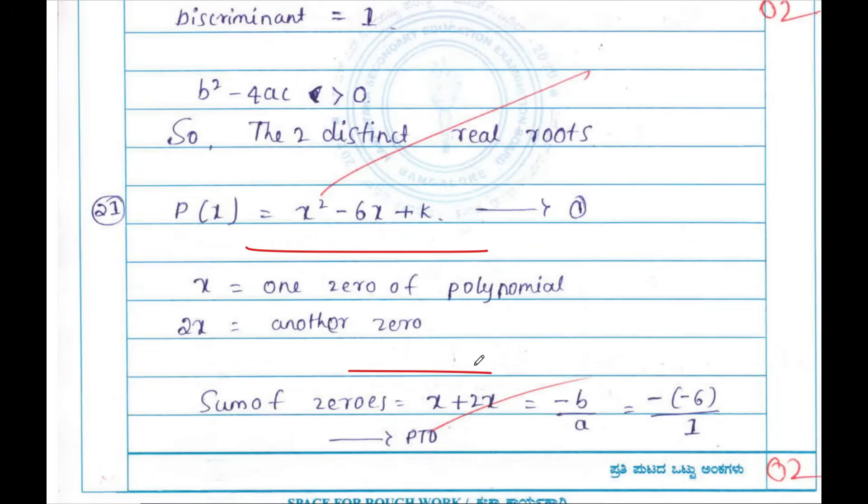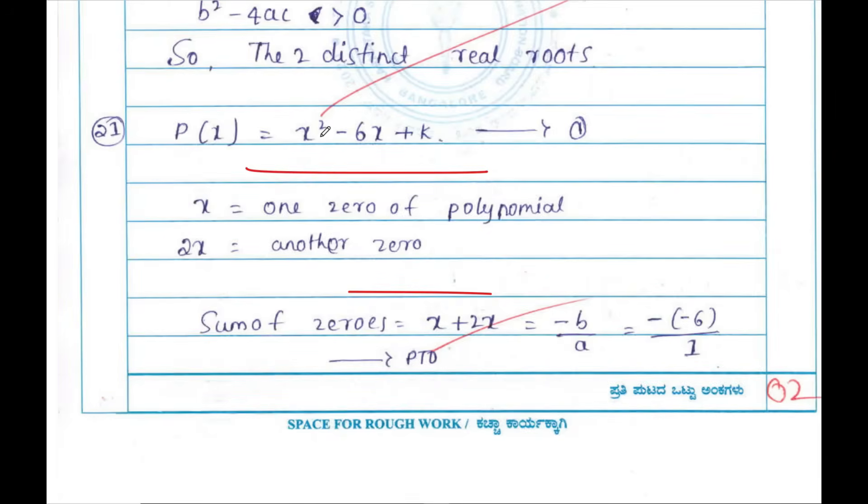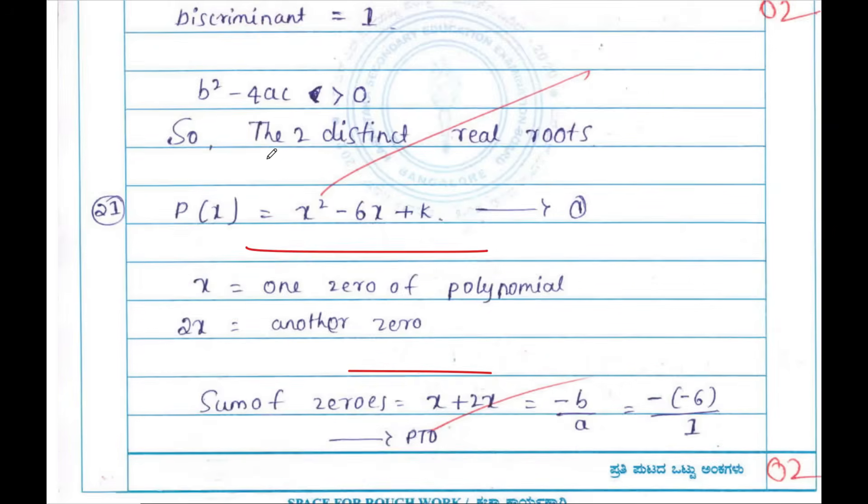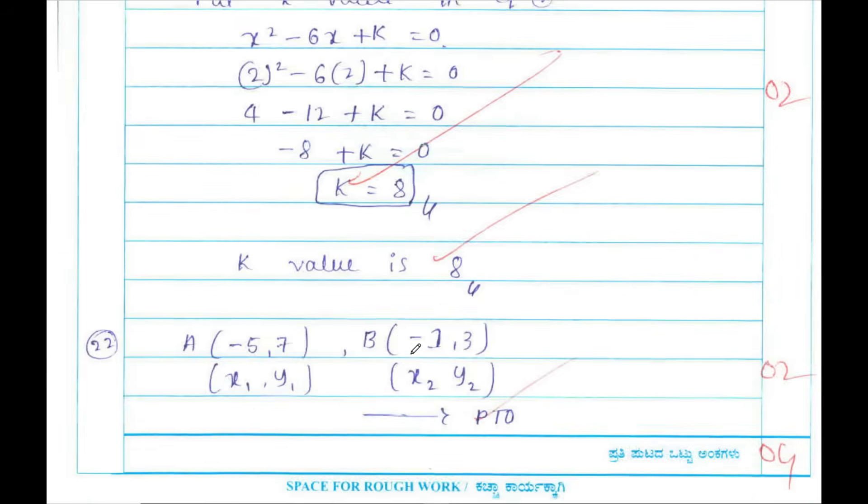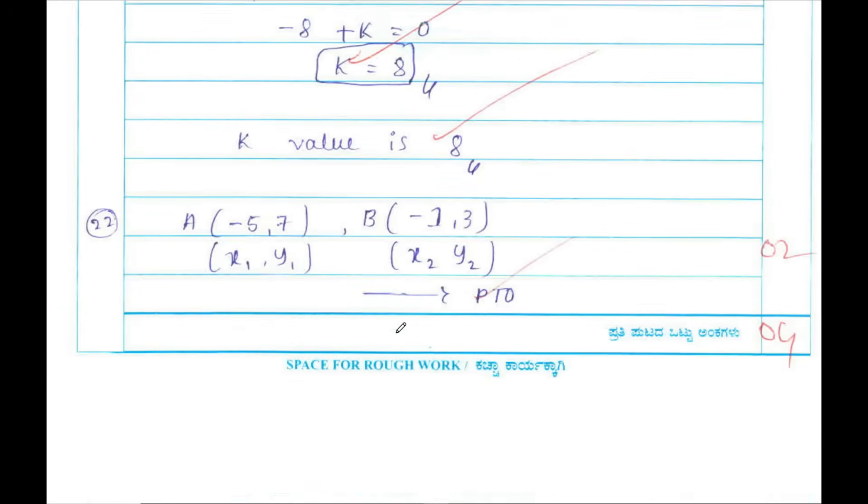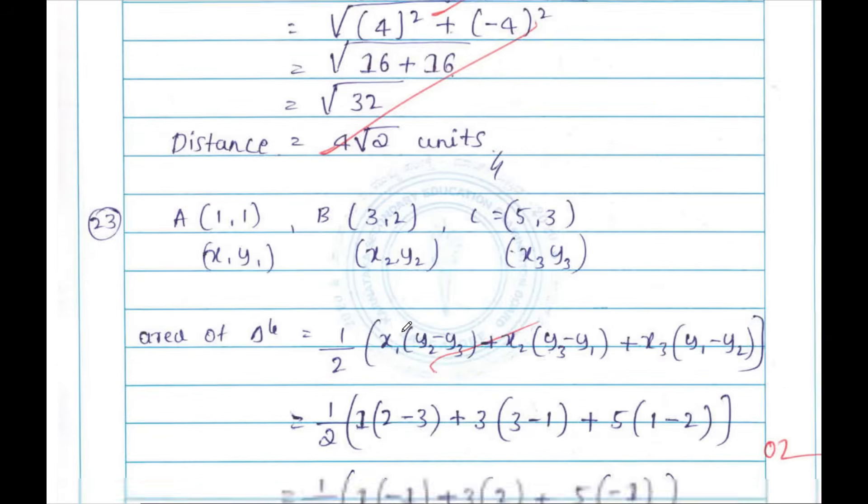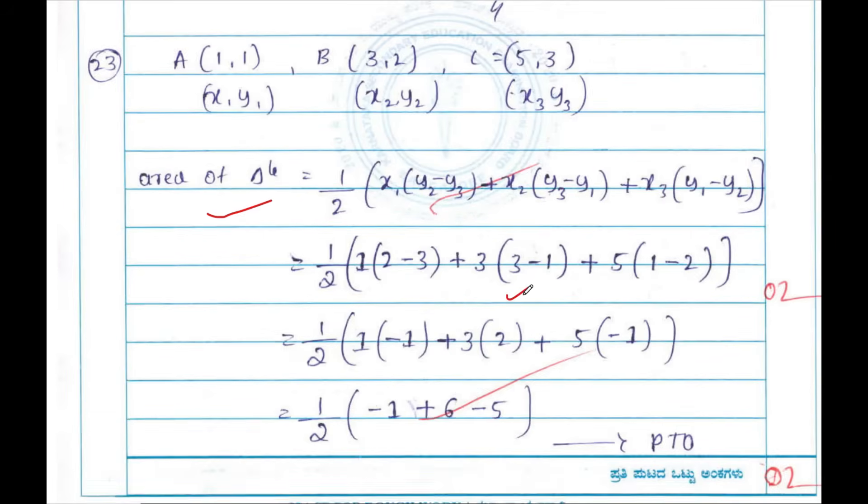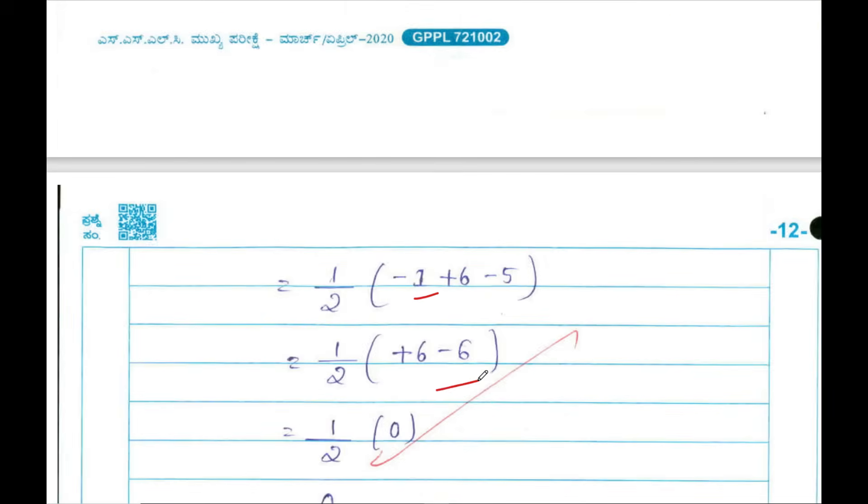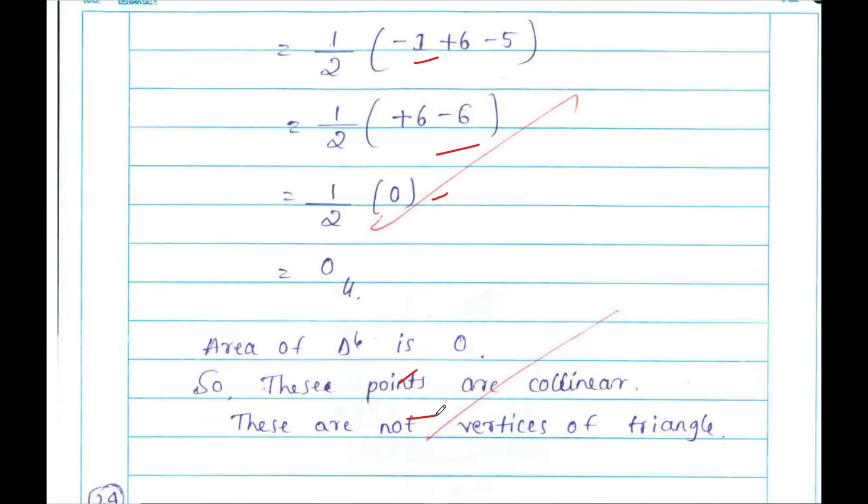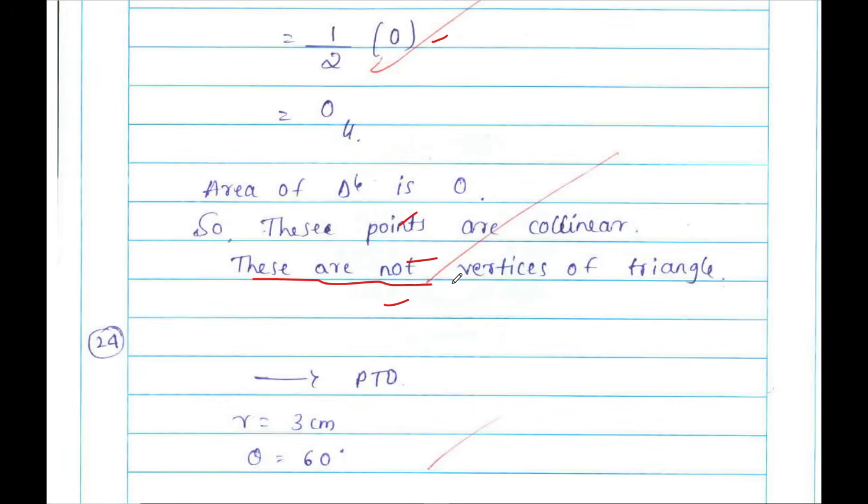The answer booklet contains around 28 pages, so you can leave spaces in between the questions. You can write it very neatly. Present answers in such a way that the evaluator should understand what you have written. See, the formula has been written, it is substituted, and it is simplified so neatly. Where statements are required, the student has written the statement. These statements are important.